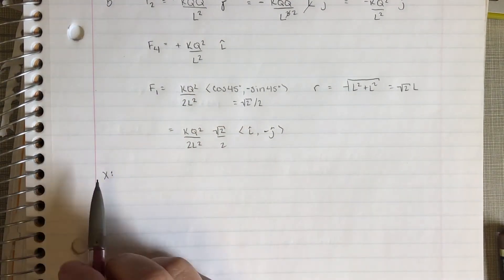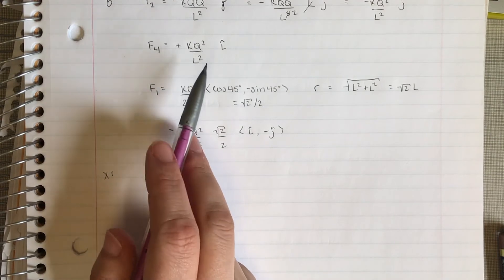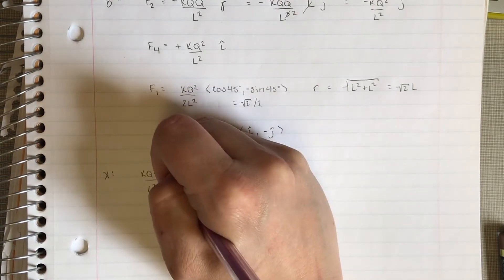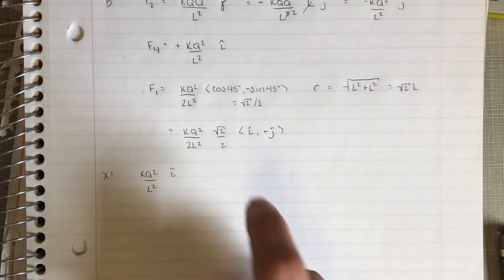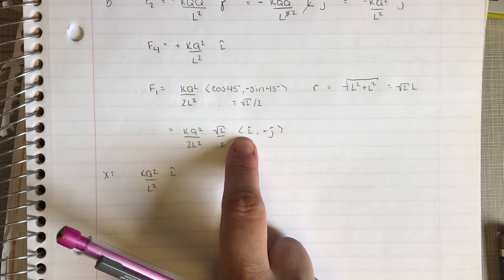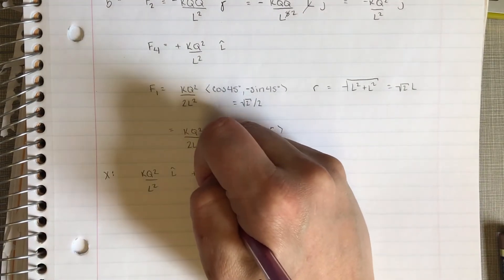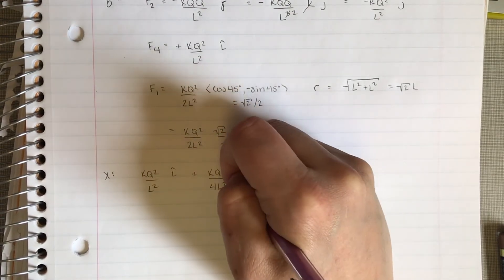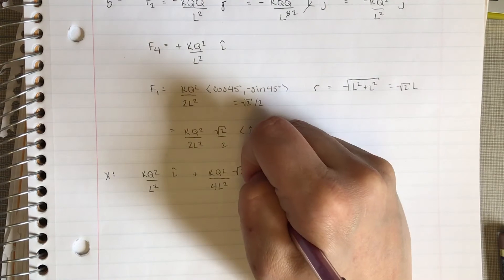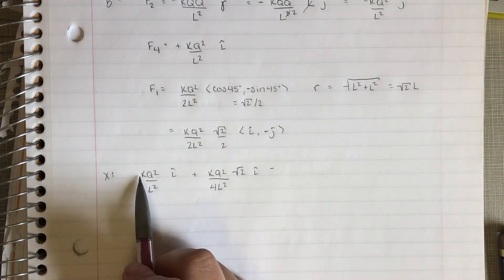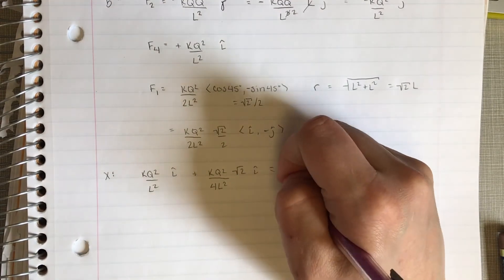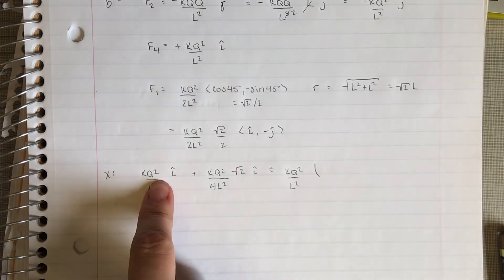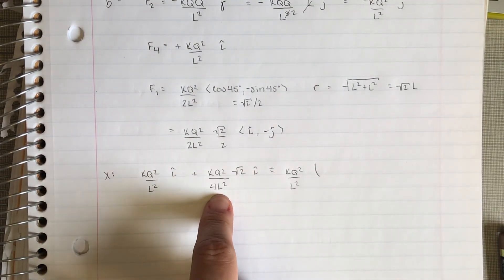If we take all of our x components, we had f4 pointing to the right, so that's going to give us k q squared over L squared pointing to the right. And then the x component of f1 was pointing to the right as well, so that's going to be plus k q squared over 4 L squared with a root 2 i hat. If we add these together, they all have k q squared over L squared, so k q squared over L squared times 1 plus root 2 over 4 i hat.